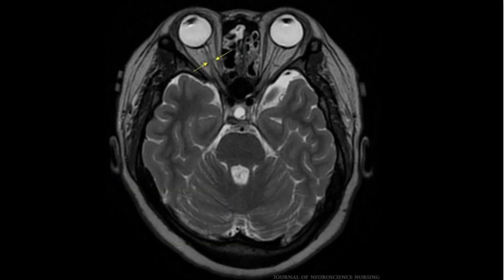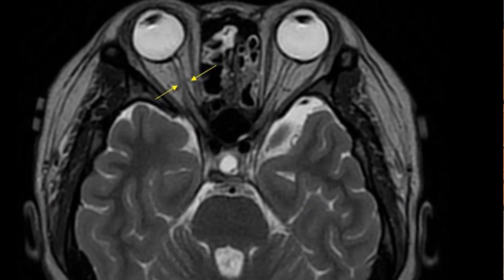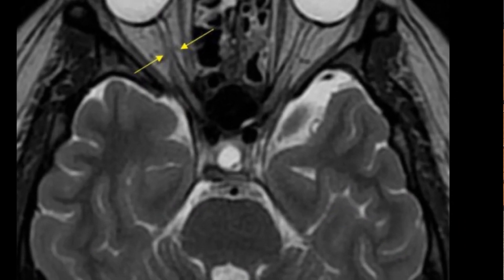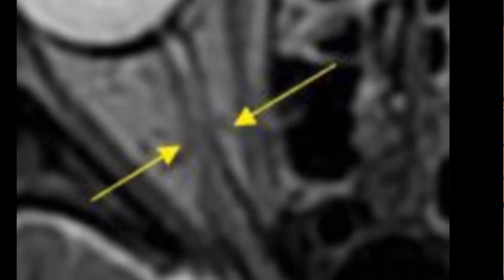In the second image, the MRI has two arrows pointing to enhancement along the optic nerve sheath. The membranes covering the optic nerves are the optic nerve sheath, and this shows how pressure might be seen on an MRI.